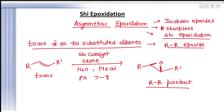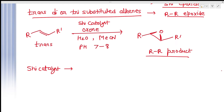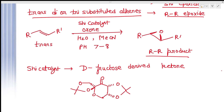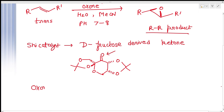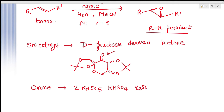So what is this Shi catalyst? Shi catalyst is actually a D-fructose-derived ketone. You can see the keto group in the structure — this keto group is basically between two ketal centers, and that is why you are getting the RR-type stereospecific product. The oxone that we are using here is a mixture of KHSO₅, KHSO₄, and K₂SO₄ — this is oxone.